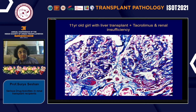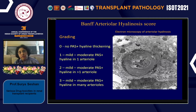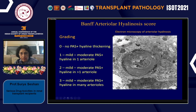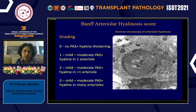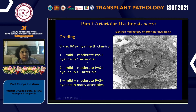Looking more closely at arteriolar hyalinosis: the intima is replaced, the endothelium becomes separated from the media, and the elastica becomes separated from the media due to accumulation of intimal and medial hyalinosis. The Banff transplant pathology scoring system includes an arteriolar hyalinosis score because these pathologic findings contribute to graft dysfunction. Grade 1 is mild — one arteriole affected; Grade 2 is mild-to-moderate — more than one arteriole affected; Grade 3 is many arterioles affected segmentally or circumferentially.